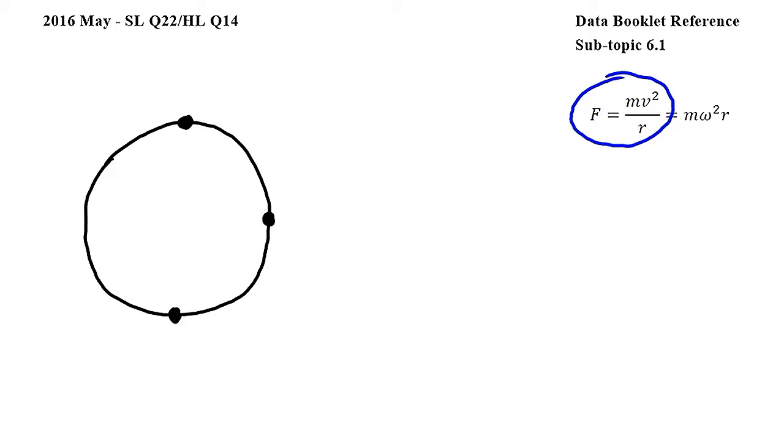we can conclude that since the speed is given to be constant in this question, F, the centripetal force, is also constant, since the mass of the object and the radius of the circle do not change.